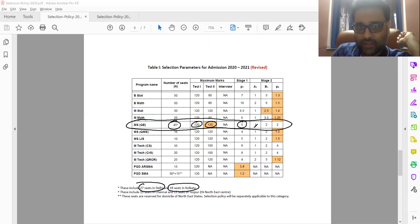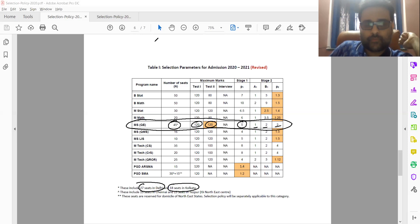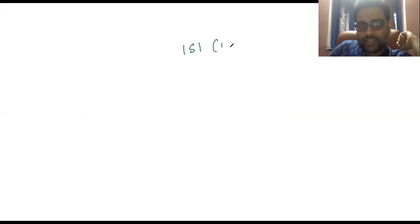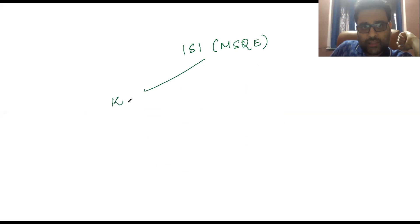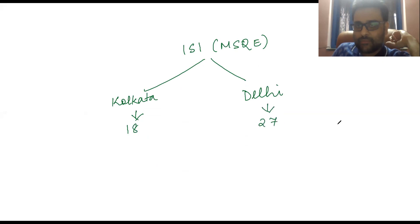MSQE has 45 seats in total — 27 in ISI Delhi and 18 seats in ISI Kolkata. The total marks are 120 and 120 for each of the tests in forenoon and afternoon. These are a few values which I will be explaining how to calculate. P1 is equal to 5, A1 and P1 are 1 and 2, and P2 is equal to 2. We will be seeing what these mean exactly.